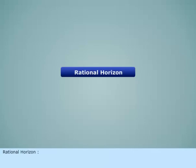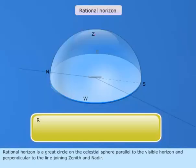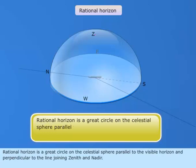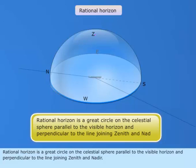Rational Horizon is a great circle on the celestial sphere parallel to the visible horizon and perpendicular to the line joining zenith and nadir.